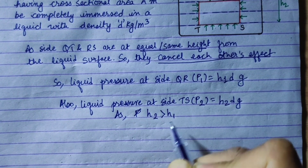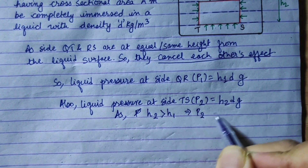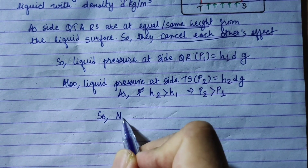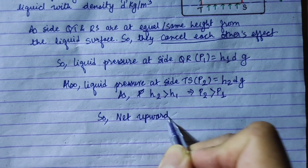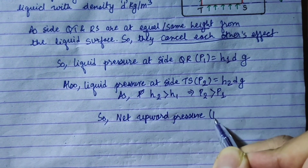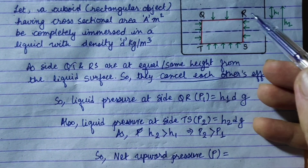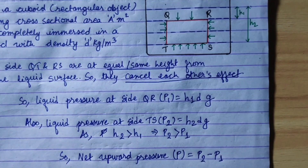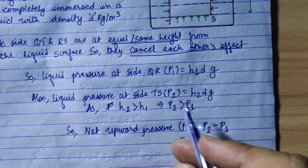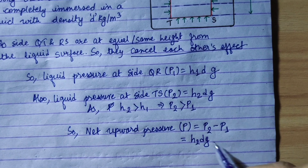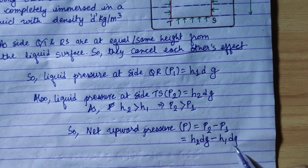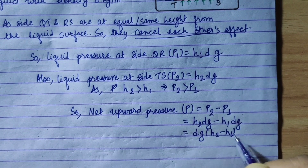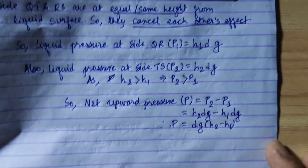As h2 is greater than h1, p2 would be greater than p1. So there is a net upward pressure. Net upward pressure P = p2 minus p1. p2 = h2·d·g and p1 = h1·d·g. Taking dg common: net upward pressure = d·g·(h2 - h1).